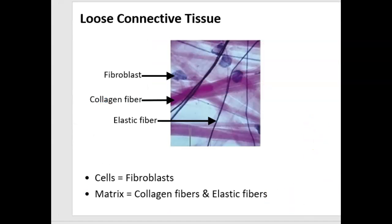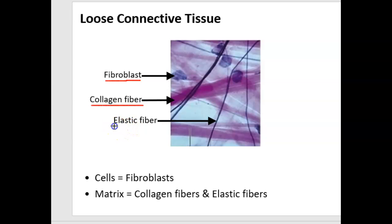Here's loose connective tissue with the fibroblasts secreting fibers. Now we need to talk about the different types of fibers found in each of these proper connective tissues. In loose connective tissue, there's two kinds of fibers: collagen fibers and elastic fibers. The elastic fibers are thin and darkly stained. When this loose connective tissue is stretched, the elastic fiber allows it to recoil and retain its shape. The collagen fiber gives strength.